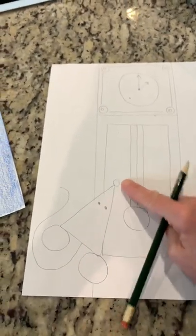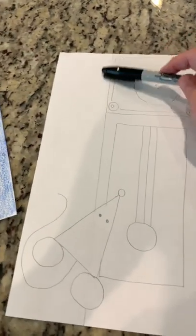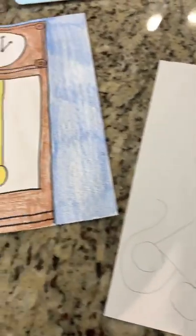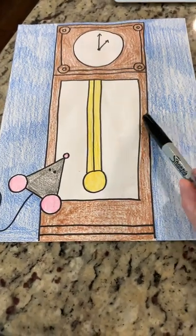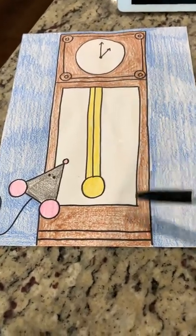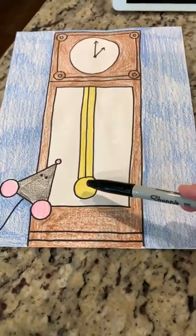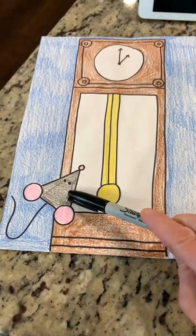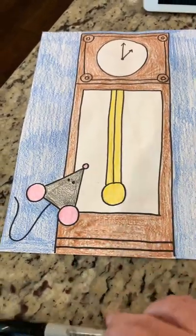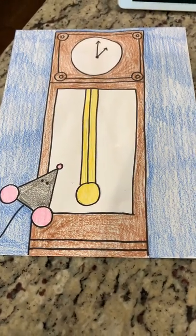Take a sharpie and outline all your pencil lines in black, and then you can color it. I colored my background blue—you can do whatever you want. My clock was brown to look like brown wood. The pendulum is usually gold, so I used yellow, and I did a gray mouse with pink ears.